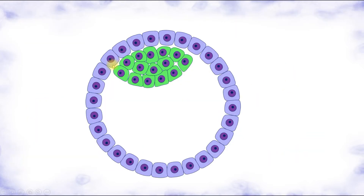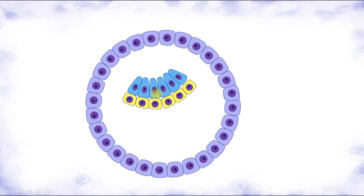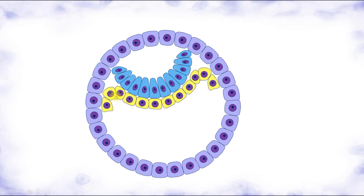The epiblast and hypoblast plates begin their growth — those cells undergo divisions and the plates grow at their margins, at their peripheral zones. Here we can see the growth of the epiblast, and the hypoblast is also growing. They don't have enough space to remain completely flat, so the margins of those plates become flexed and form concave structures.